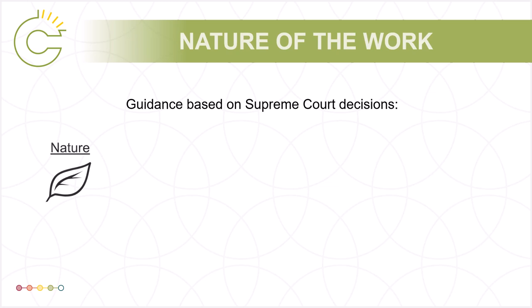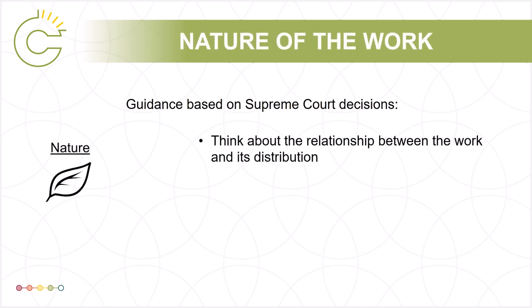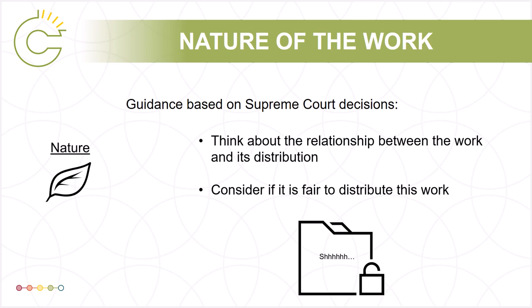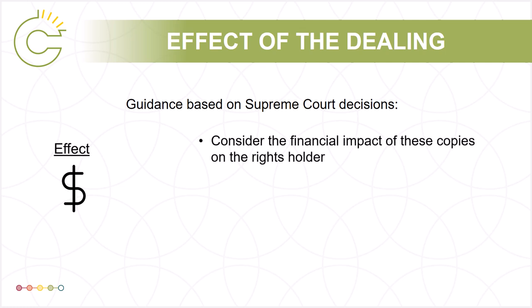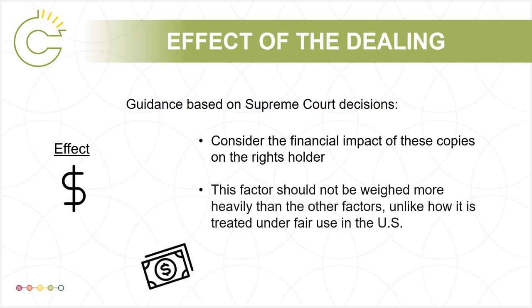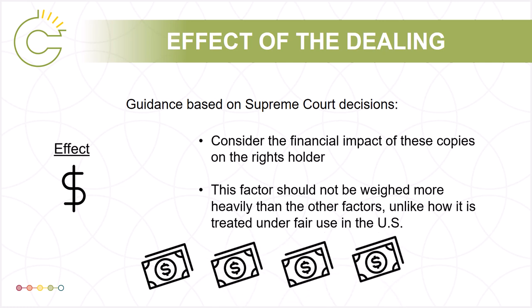The nature of the work centers on the relationship between the copied work and its distribution. Copying a confidential work is less fair, although copying an unpublished work may be more fair if the copying is acknowledged and potentially leads to wider public dissemination. Finally, the effect of the dealing on the work considers to what degree the copies made compete with and adversely impact the market for the original work. If the intended distribution diminishes the market for a work, this tends toward unfairness. But if copying may increase the market, such as offering music previews in the SOCAN case, this may tend toward fairness.